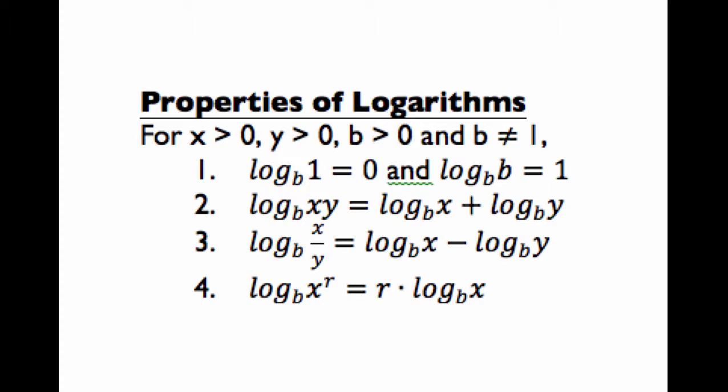Property one says log base b of one is always zero and log base b of the number b is one. Then the second and third property we'll use a lot while we're solving different logarithmic equations. If you are multiplying two things inside of a log, you can separate it into two different logarithms by adding.